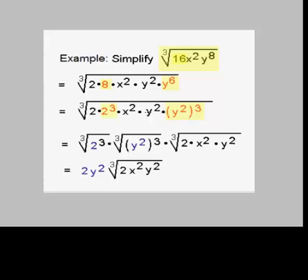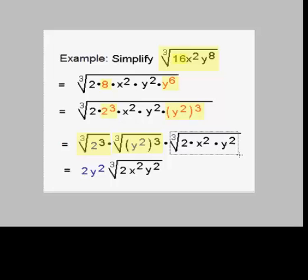Now what we can do is use the product rule for radicals and rewrite this as a product of radicals. I'm going to separate out the perfect cubes: the cube root of 2 cubed, times the cube root of y squared quantity cubed, times the cube root of the remaining factors — which would be the 2, the x squared, and the y squared.